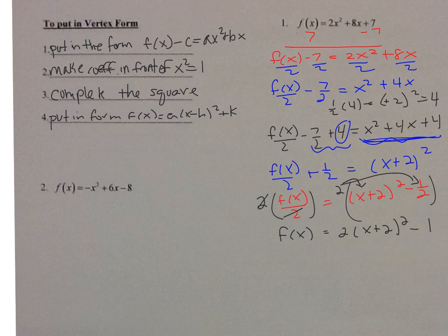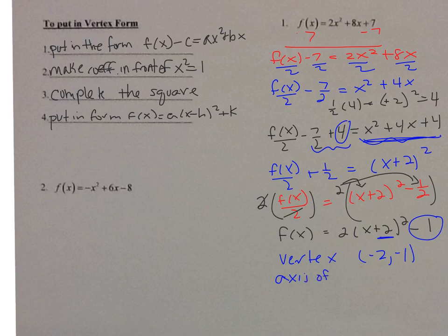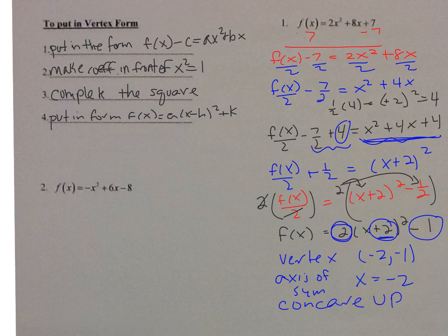Now we can identify things from vertex form. The vertex is (h, k). Remember, opposite of h. So this is h = -2 and k = -1, giving vertex (-2, -1). Axis of symmetry is x = h, so x = -2. And a is positive 2, so it's concave up.